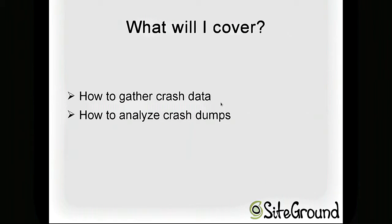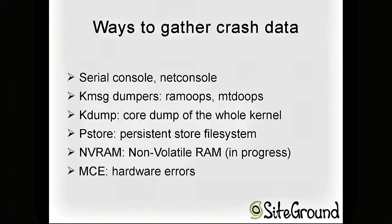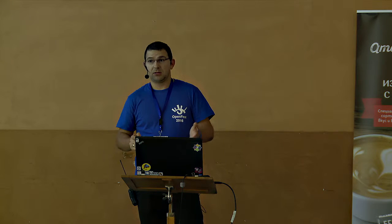What I'm going to talk about is two things: first, how to get crash dumps, and second, how to actually read them. There are a lot of ways to get the crash dump. You can first, before you reach the crash situation, analyze your oops and panics on serial console or net console. Also, there are kernel message dumpers known as ramoops and MTD, and we can think about kdump, pstore, and vram.